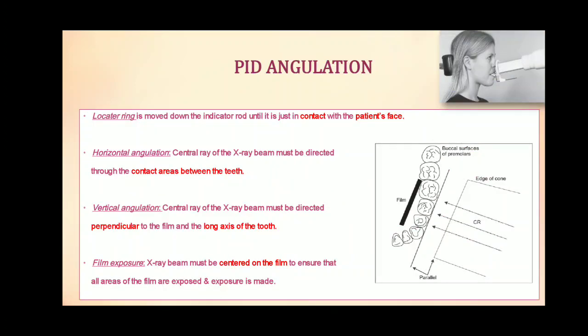For PID angulations in the paralleling technique, the locator ring is moved down the indicator rod until it is in contact with the patient's face. To ensure correct horizontal angulation, the central ray of the X-ray beam must be directed through the contact areas between the teeth. For the vertical angulation, it should be directed perpendicular to the film and the long axis of the tooth. The X-ray beam must be centered on the film to ensure that all areas of the film are exposed, and then the exposure is made.